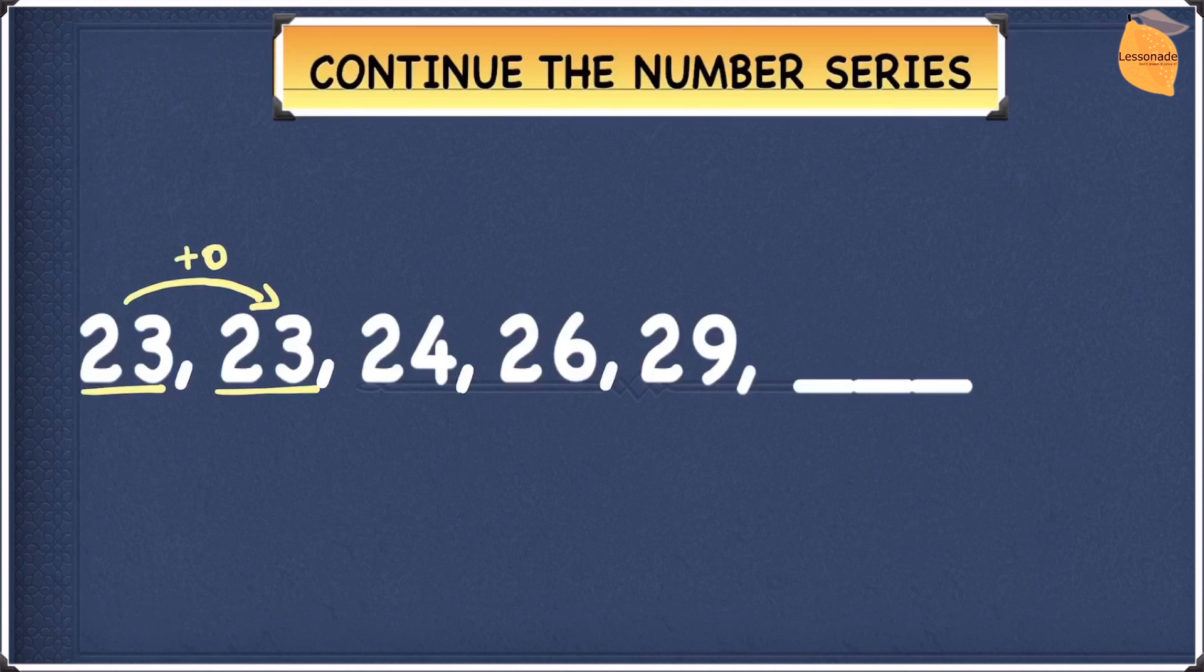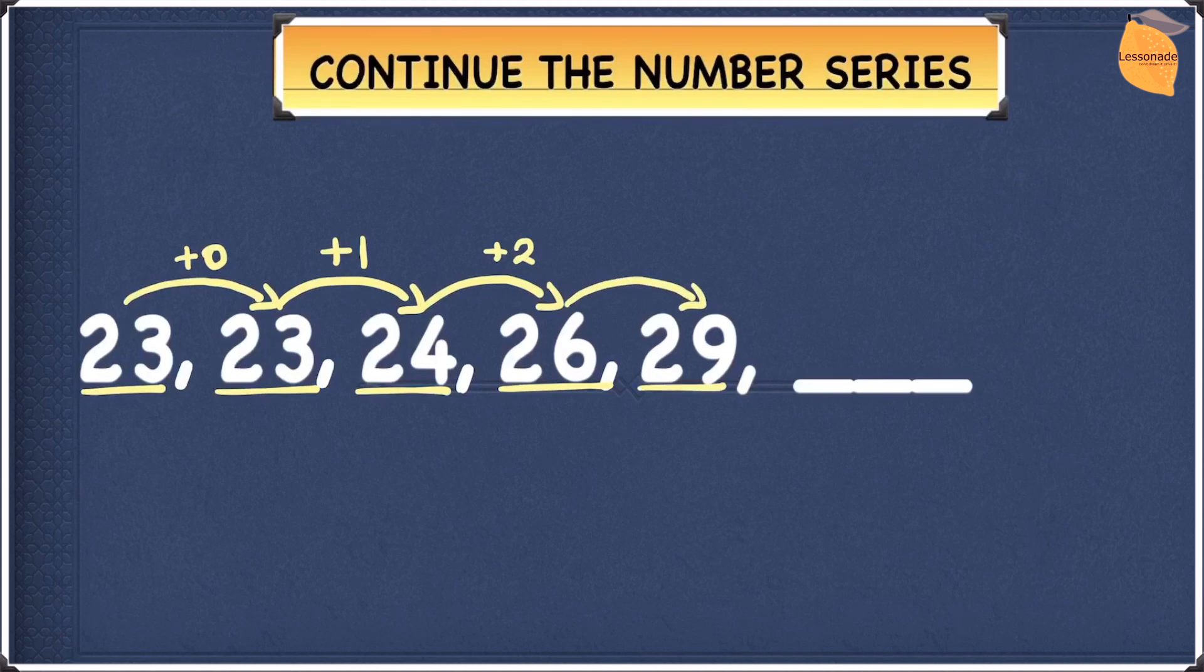Now we're going to see what we have to do to 23 to give us 24. To get from 23 to 24, you add 1. To get from 24 to 26, you will have to add 2. And to get from 26 to 29, you will have to add 3.